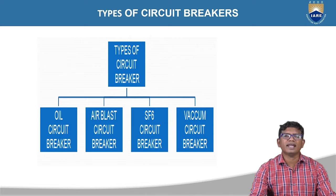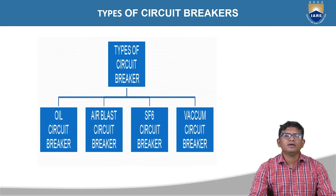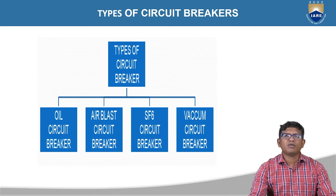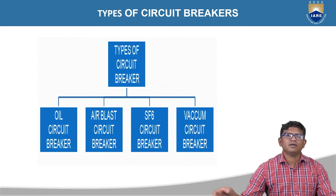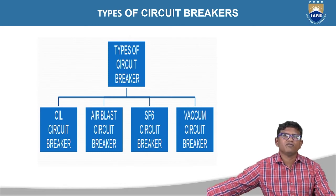Once the tripping coil is energized, the moving contact is withdrawn from the fixed contact, and the device is protected. This is the basic function of the circuit breaker. Circuit breakers are classified based on the insulating fluid.